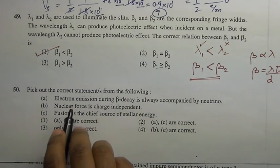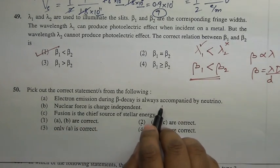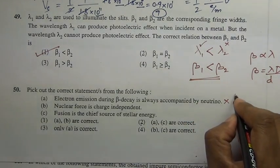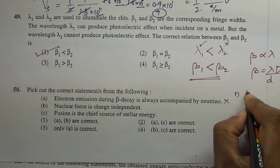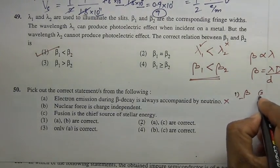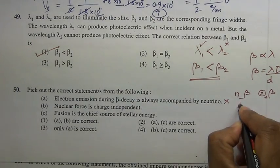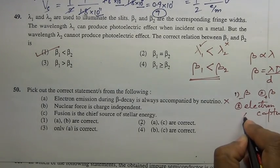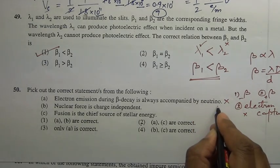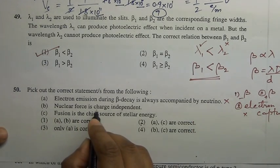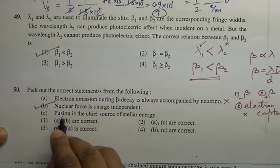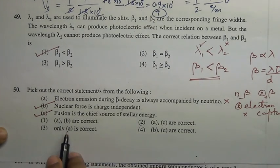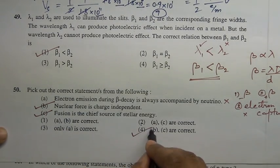Question 50: Take the correct statement. 'Electron emission during beta decay is always accompanied by a neutrino' — No, because there are three types of electron emission: beta minus, beta plus, and electron capture. In electron capture there is no emission of neutrino. 'Nuclear force is charge independent' — True. 'Fusion is the chief source of stellar energy' — True. Since B and C are true, the answer is option four.